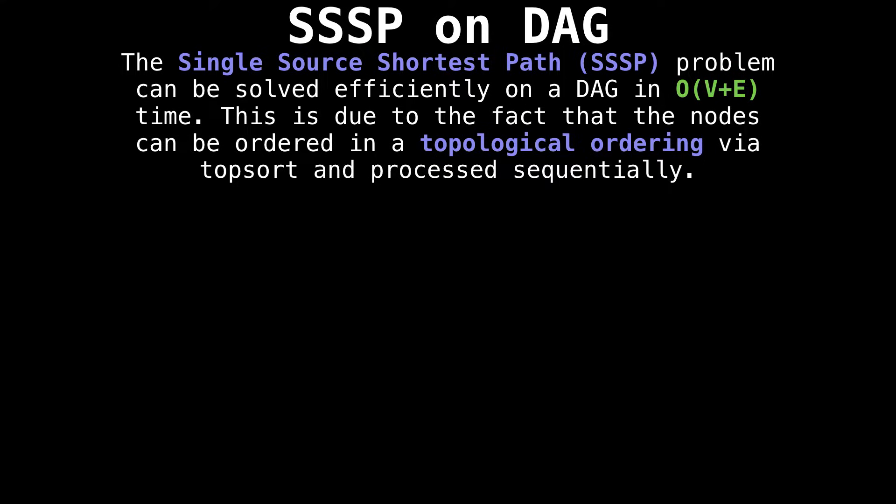The next fastest single source shortest path algorithm is Dijkstra's algorithm, which may not work if there are negative edge weights. This algorithm I'm about to show you is faster and doesn't care about positive or negative edge weights.